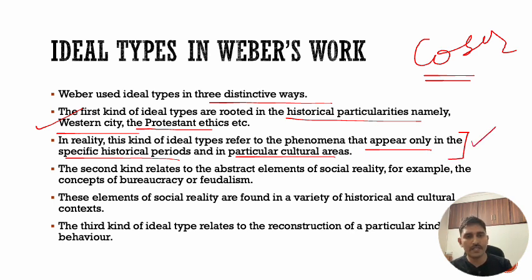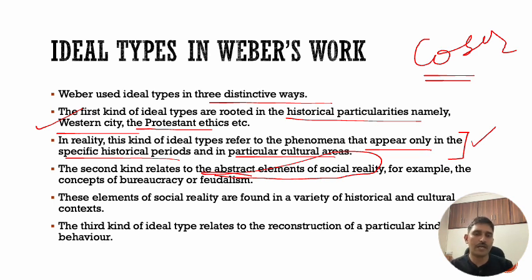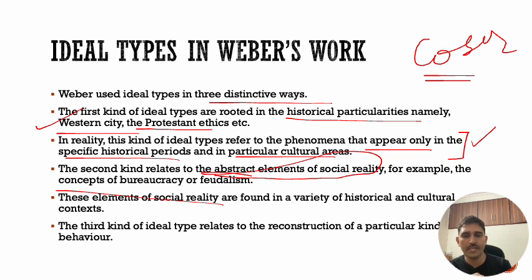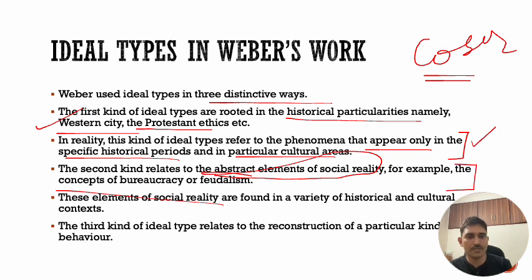Second, he made ideal types of abstract elements of social reality. For example, he did ideal type research on bureaucracy, feudalism, authority, and social action — these form the second category. Third category of ideal types relates to the reconstruction of a particular kind of behavior, though Weber's most significant work is in the first two categories.